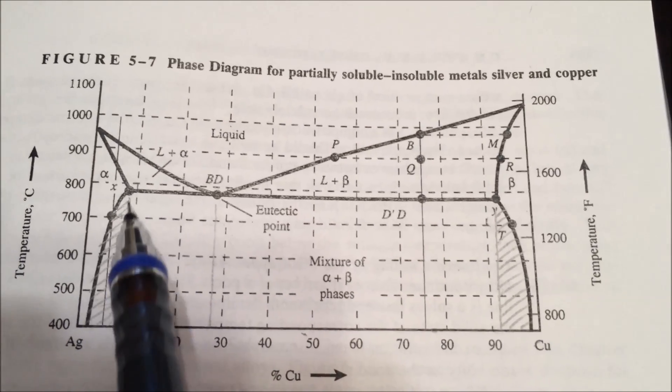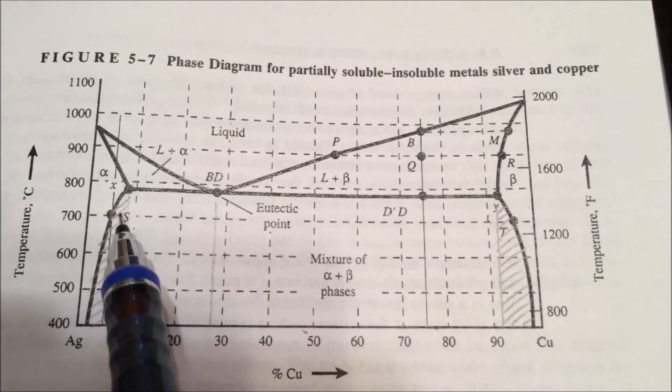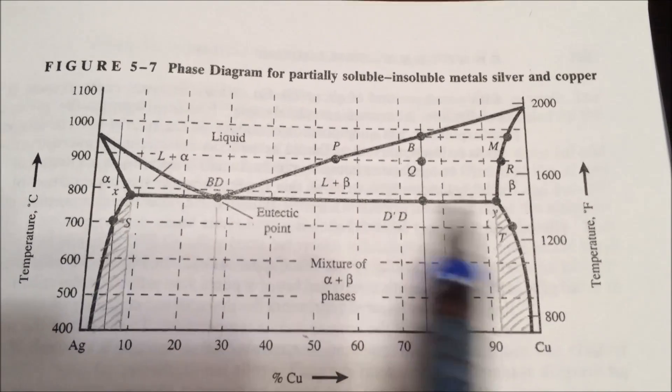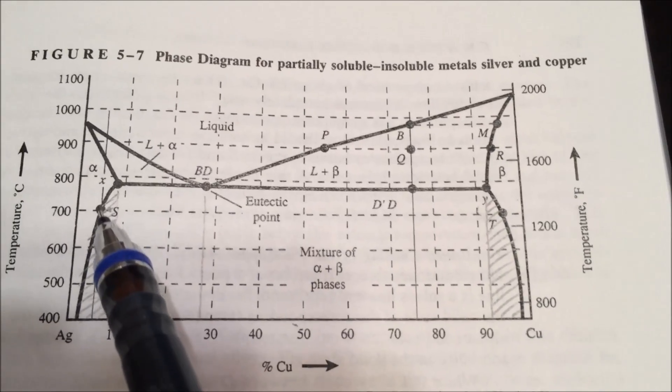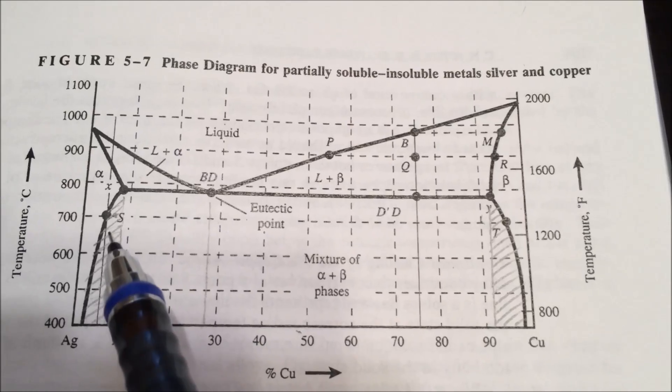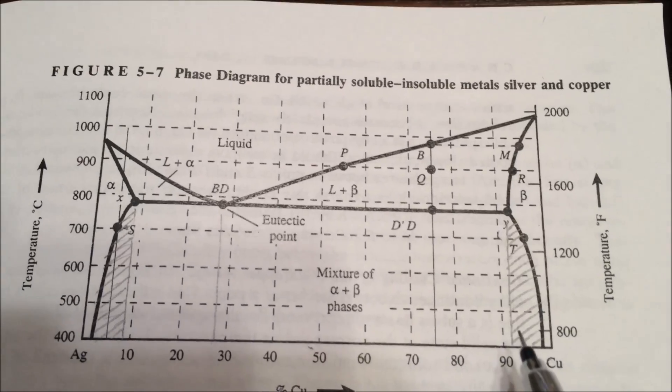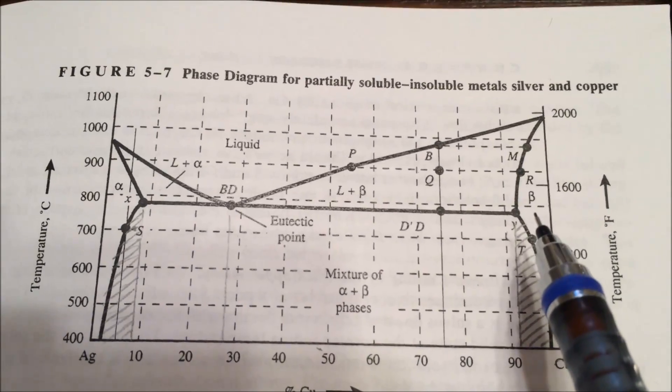If it's under this region that's a non-horizontal line, then we would draw a tie line to the left and right to alpha and beta. And we would follow these points down to see that this is about 5% in the alpha phase. And over here, T is about 96% in the beta phase.